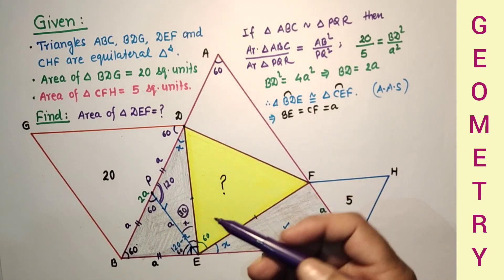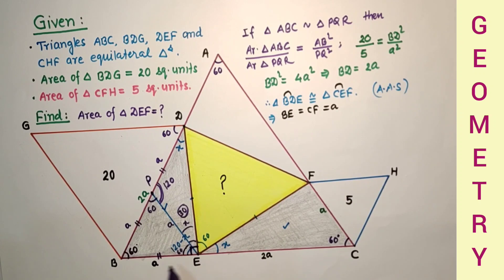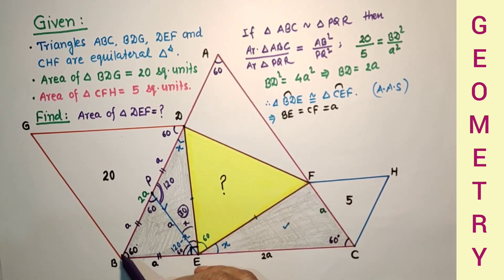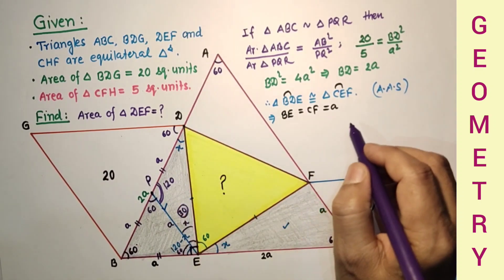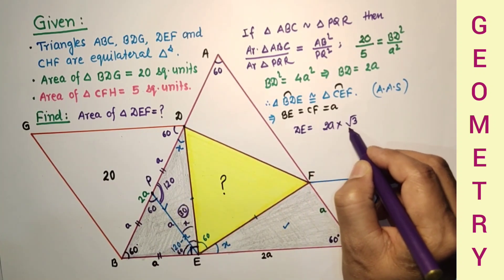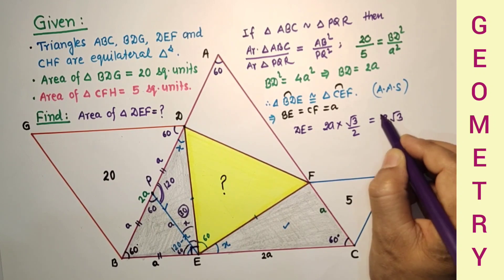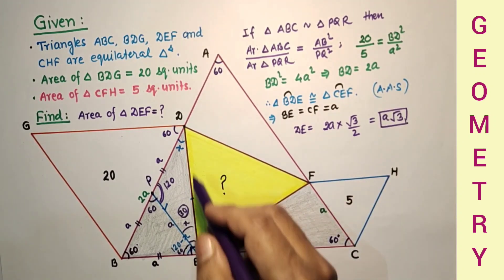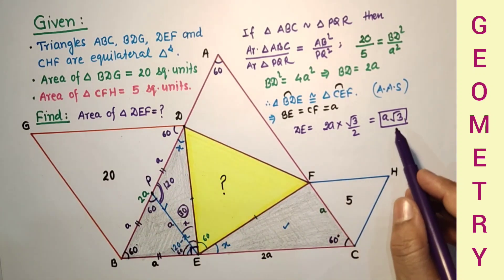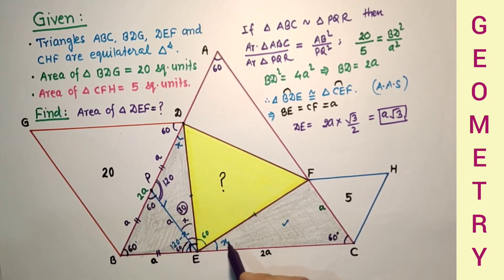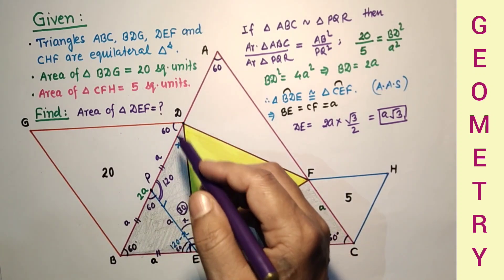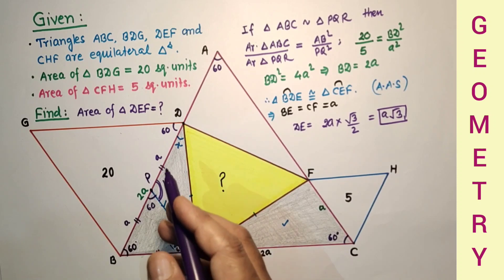Since triangle BED is a right triangle, by the 30-60-90 theorem, the side opposite the 60° angle equals (√3 / 2) times the hypotenuse. So DE = 2A × (√3 / 2) = A√3. Alternatively, by Pythagoras: DE² = 4A² − A² = 3A², so DE = A√3.